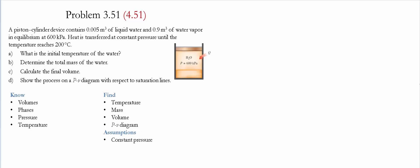Heat is then transferred at constant pressure until the temperature reaches 200 Celsius. We need to determine the initial temperature of water, the total mass of the water, calculate the final volume, and describe the process showing it in a PV diagram.